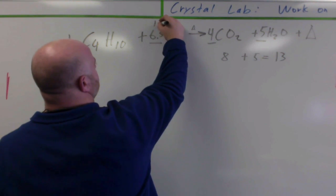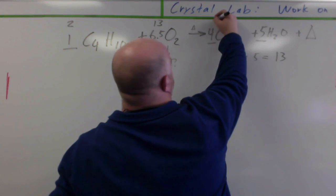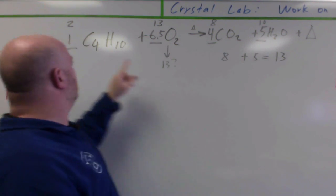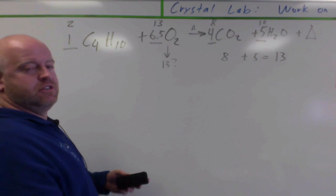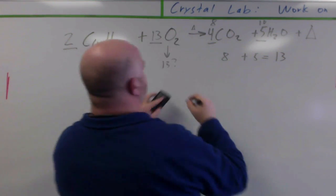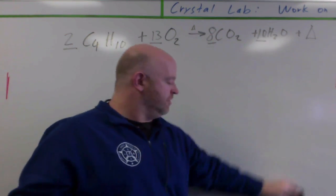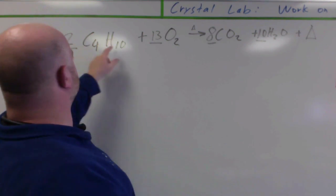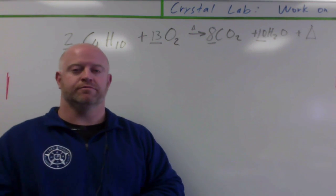So my coefficients are one, six-and-a-half, four, and five. To fix the fraction, just double everything. Six and a half becomes thirteen, one becomes two, four becomes eight, five becomes ten. Let's verify: two times four is eight carbons; two times ten is twenty hydrogens, ten times two is twenty hydrogens. Thirteen times two is twenty-six oxygens; eight times two is sixteen plus ten is twenty-six. So my equation is balanced.